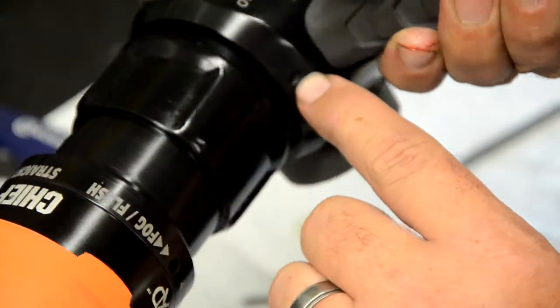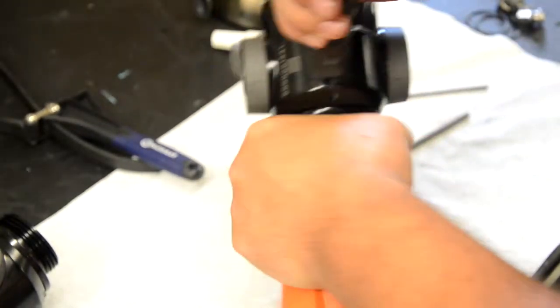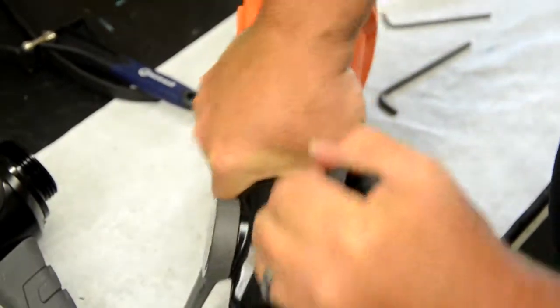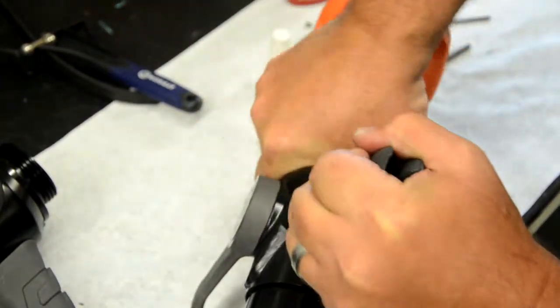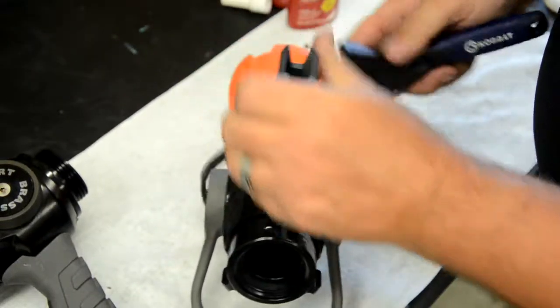Using the strap wrench, thread and tighten the nozzle tip onto the shutoff body. Watch for the pre-drilled hole from the factory assembly and line that up with the set screw hole in the bottom of the shutoff body. We recommend placing a small piece of tape or something to temporarily mark that area on the nozzle tip to help you align it a lot easier.